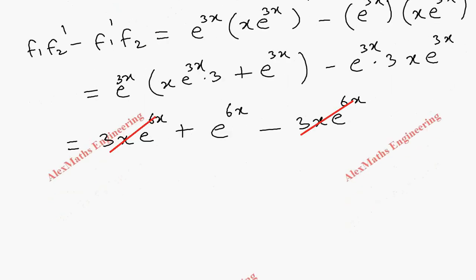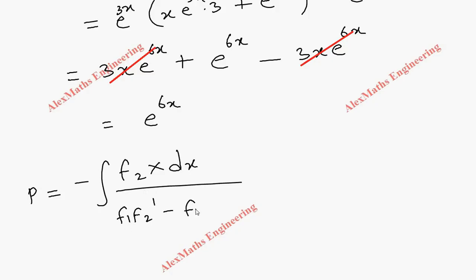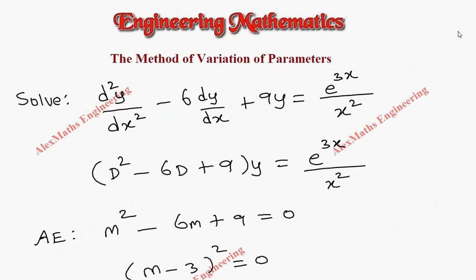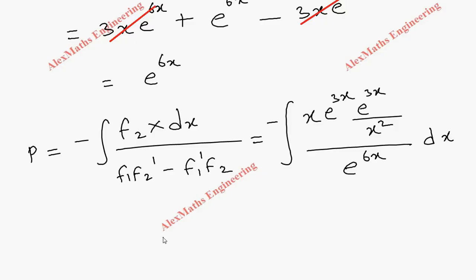Coming to p: p = -∫(f₂·X dx) / (f₁f₂' - f₁'f₂). Here f₂ = x·e^(3x) and X = e^(3x)/x². So the numerator is x·e^(3x)·e^(3x)/x² = e^(6x)/x, and the denominator is e^(6x). We can cancel e^(6x), leaving 1/x in the numerator.